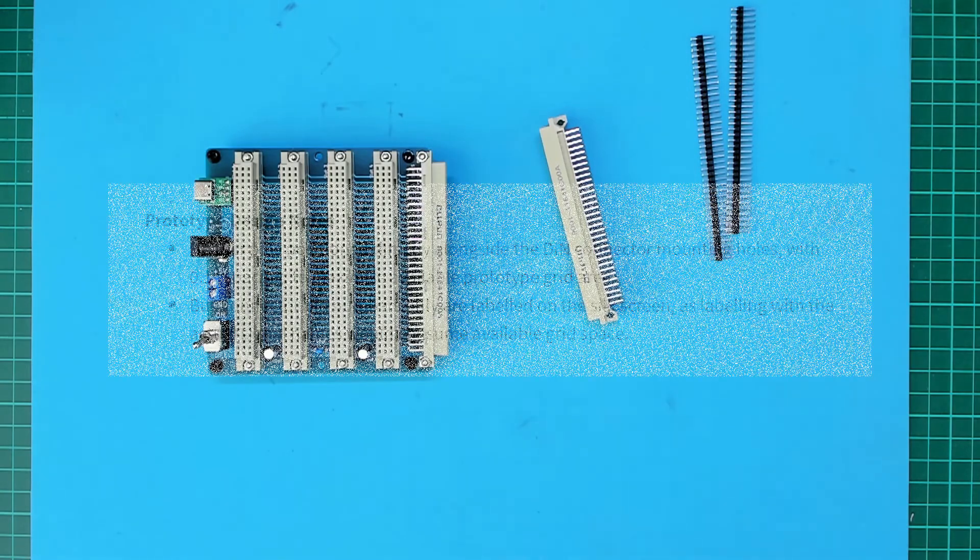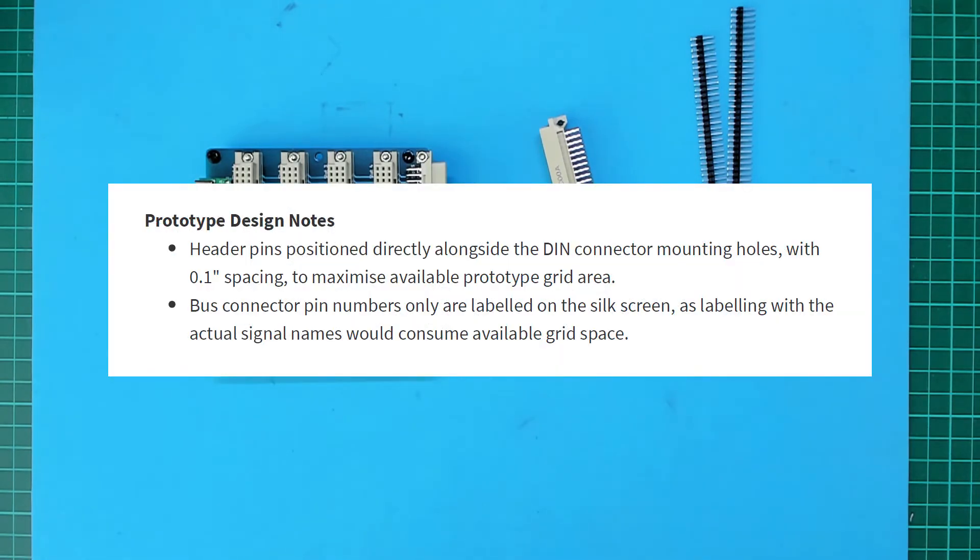And a few design notes. The header pins are positioned directly alongside the DIN connector mounting holes with 0.1 inch spacing to maximize available prototype grid area. The bus connector pin numbers only are labeled on the silk screen, as labeling with the actual signal names would consume available grid space.